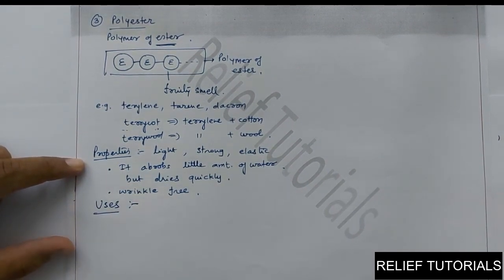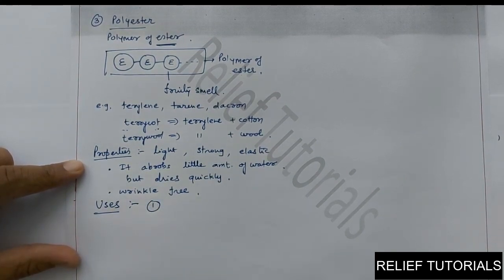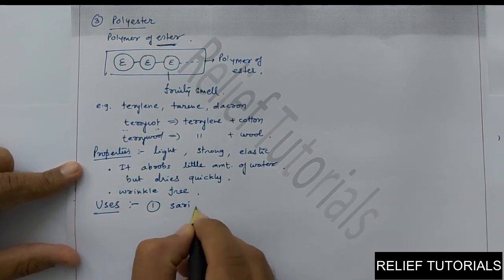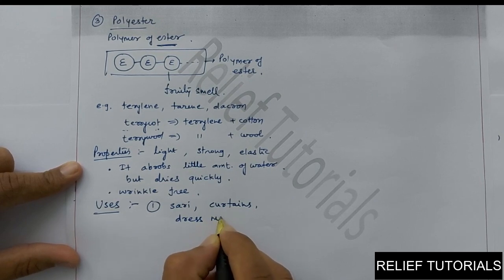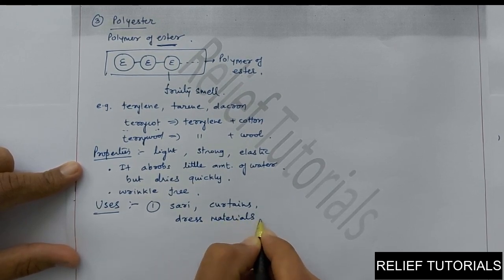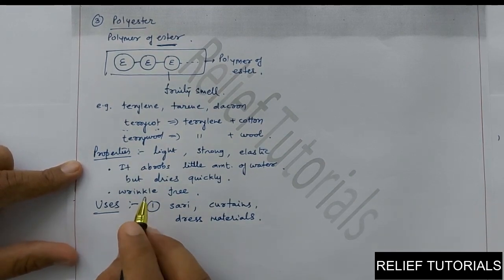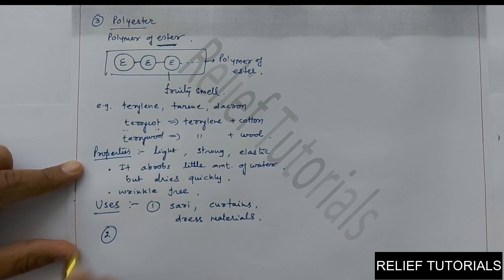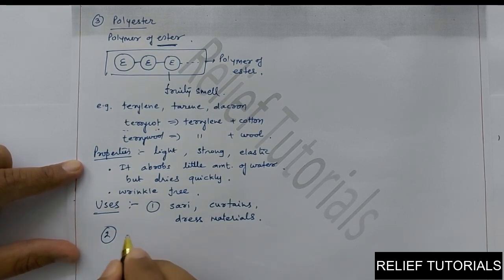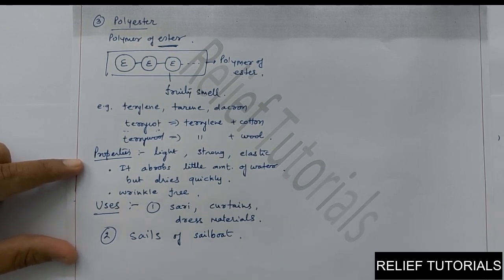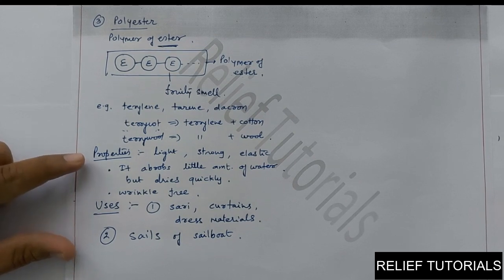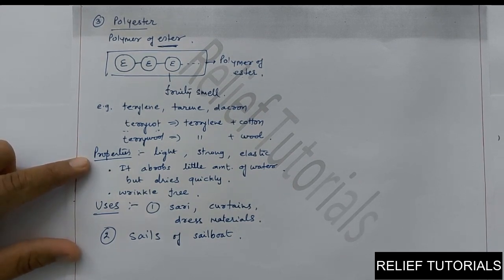What are the uses of polyester? First, it is used to make sarees and dress material. Second, polyester is used to make sails of sailboats — the sails of a sailboat are formed from polyester.